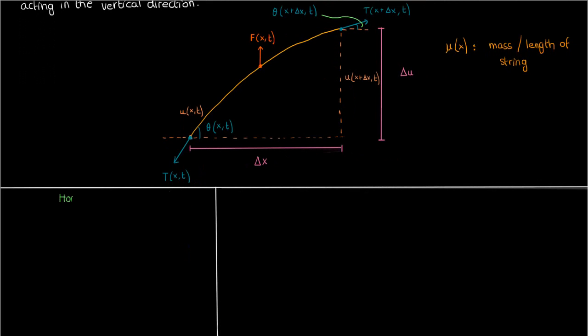Now let's balance out the forces in both the horizontal and vertical directions. We're assuming that the string is only vibrating in the vertical direction, and because the string isn't moving in the horizontal direction, the horizontal forces have to cancel out.